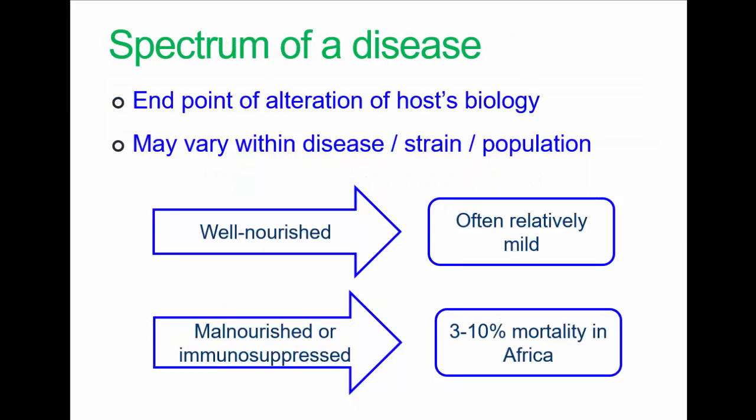Some more definitions. The spectrum of a disease: in some people, the disease process may never progress to a clinically apparent illness. In others, the disease process may result in illness — a change from mild to severe or even fatal. This range is called a spectrum of disease.